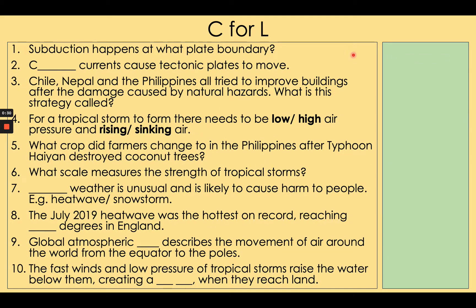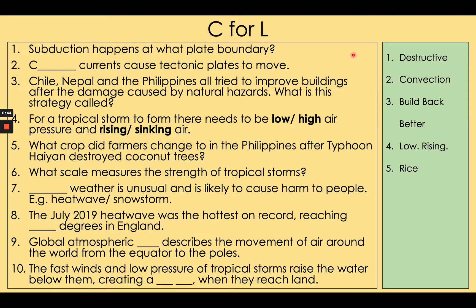The answers are: 1. Destructive plate boundary. 2. Convection. 3. Build back better. 4. Low air pressure and rising air. 5. Rice. 6. Sapphire Simpson. 7. Extreme weather. 8. 38.7 degrees. 9. Global atmospheric circulation. 10. Storm surge.